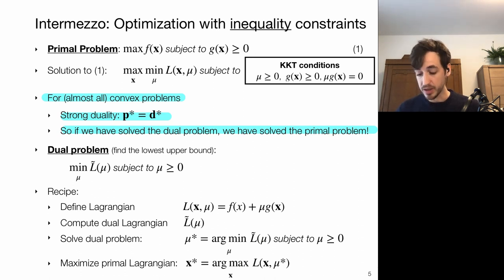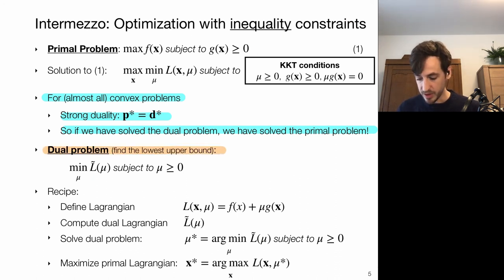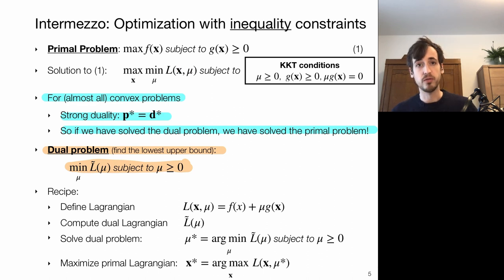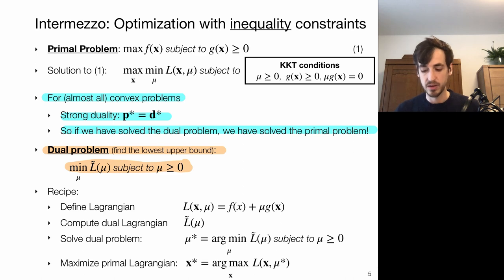When we solve such an inequality constraint optimization problem, we define a dual Lagrangian and a dual problem, because minimizing this gives the tightest upper bound for the original problem. In the convex optimization cases considered in this course, solving the dual problem also gives us the solution to the primal problem.